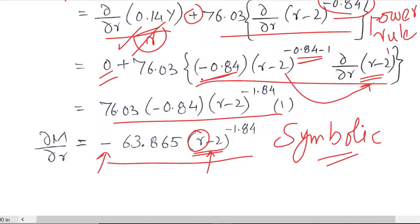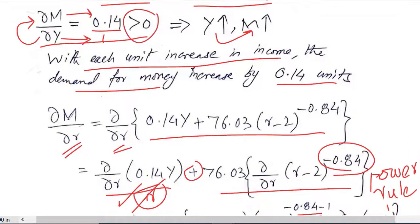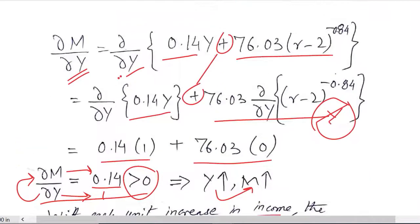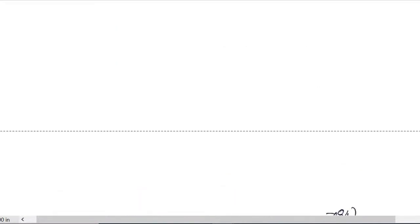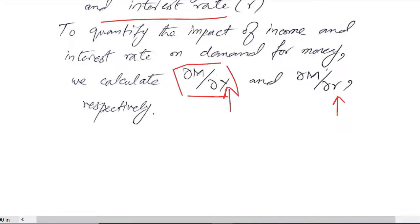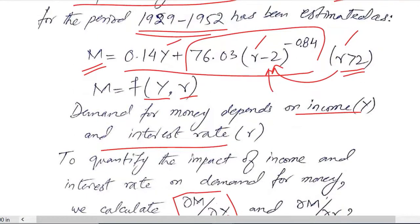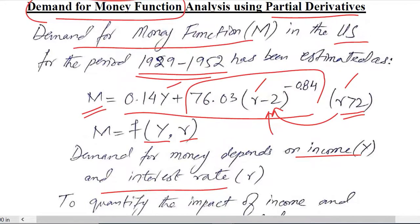So in this way we can analyze a given demand function by using partial derivatives. In this case it was the demand for money function of US economy. The data was empirical in nature that was used to estimate the demand function, and that demand function is basically used in this economic application of partial derivatives. Thank you.